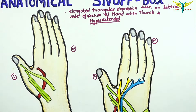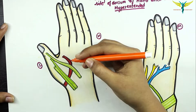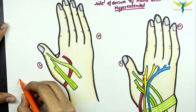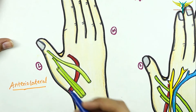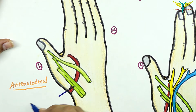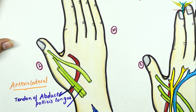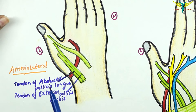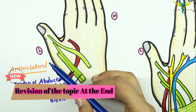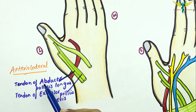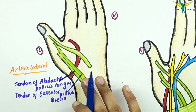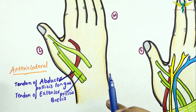Now let's talk about the boundaries of the anatomical snuff box. The anterior lateral boundary is formed by two tendons. Anteriorly and laterally, the boundary is formed by the tendon of the abductor pollicis longus and the tendon of the extensor pollicis brevis. Pollicis means thumb, and the abductor pollicis longus helps in abduction of the thumb. The anatomical snuff box is only visible when the thumb is hyperextended, which is why the extensor pollicis brevis comes into action.